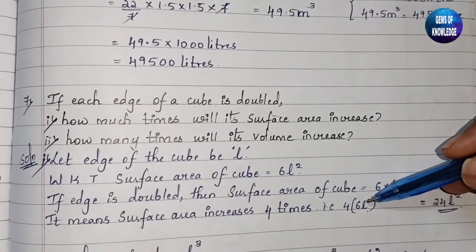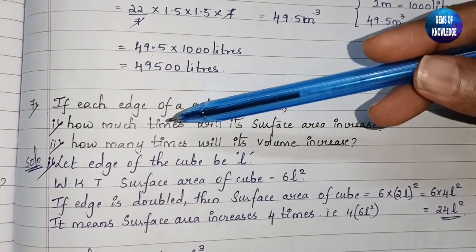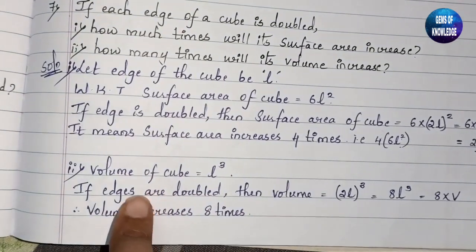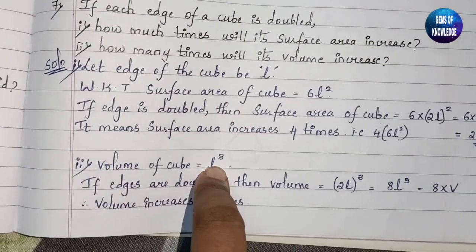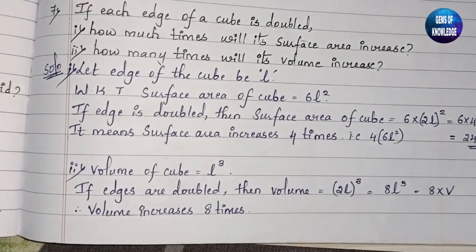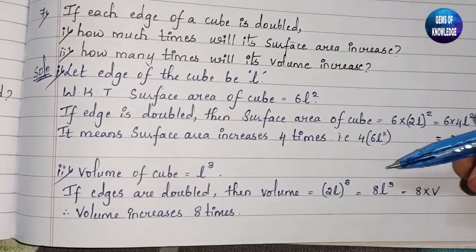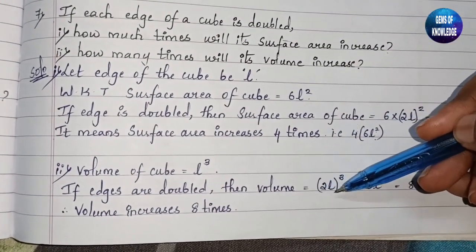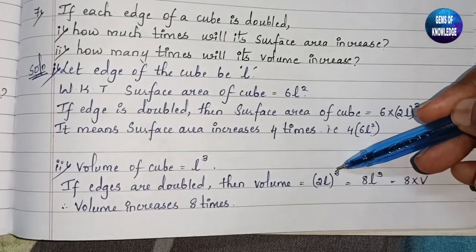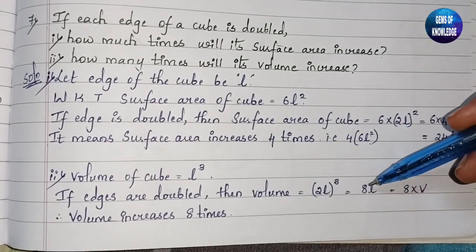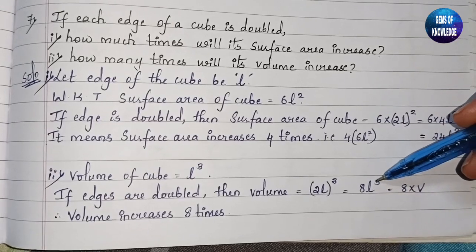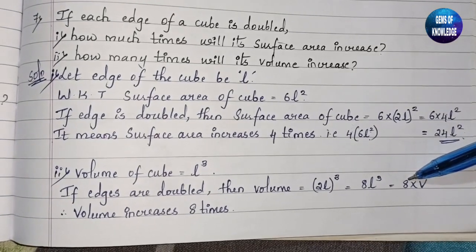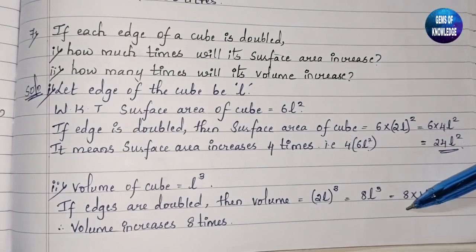Similarly, how many times will the volume increase when each edge is doubled? Original volume = l³. New volume = (2l)³ = 8l³. So the volume increases 8 times. When edges are doubled, surface area increases 4 times and volume increases 8 times.